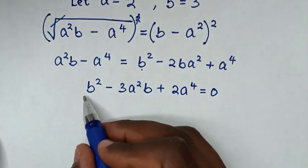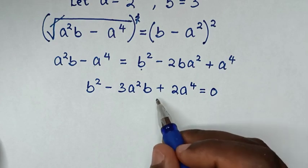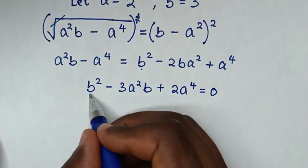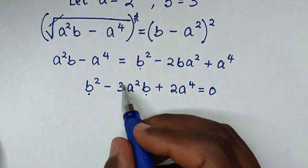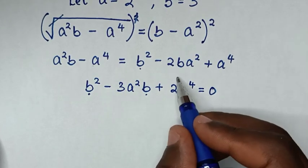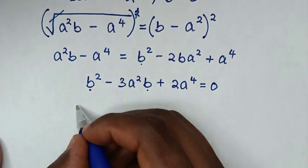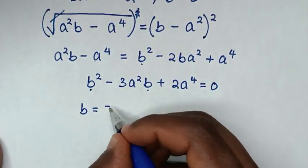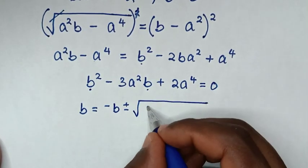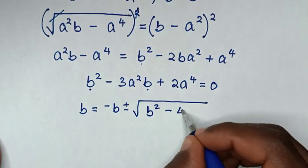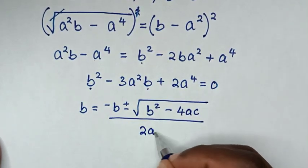From here, we solve this as a quadratic equation in b. The coefficient of b² is 1, the coefficient of b is negative 3a², and the constant is 2a⁴. Applying the quadratic formula: b equals negative B plus or minus square root of (B² minus 4AC), all over 2A.